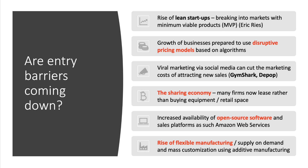They're very successful at breaking into markets because they can market their products at a fraction of the cost of old-scale firms. Examples my students suggested include Gymshark, the successful emerging UK sports fashion brand, and Depop, a platform for trading personal items. The sharing economy is also growing — many businesses now lease rather than buy equipment, lease retail space through pop-up shops, and lease capital equipment, which brings down the cost and risk of entering a market.